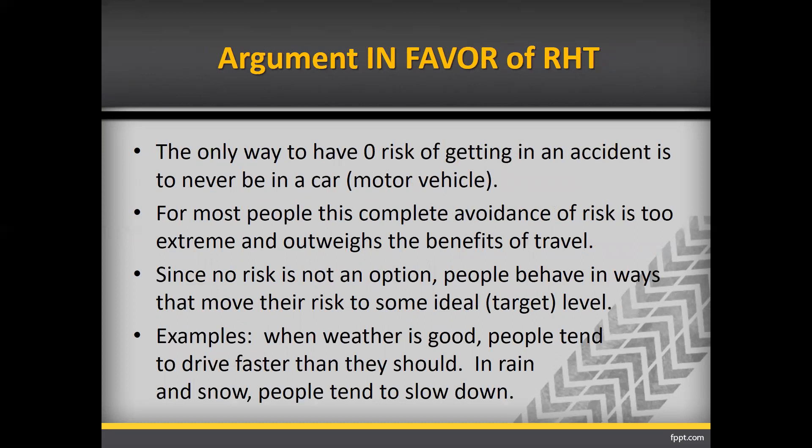Let's start with the argument in favor of risk homeostasis theory. First, we need to realize that the only way to have zero risk of getting in an accident is to never be in a car or motor vehicle. But for most people, complete avoidance of vehicles is just too extreme — it's not realistic. Since zero risk is not an option, people will behave in ways that move their risk to their ideal or target level.